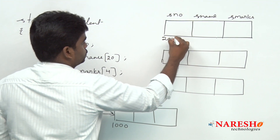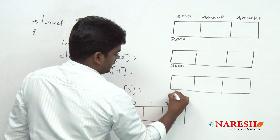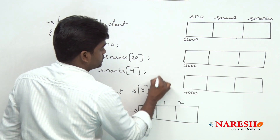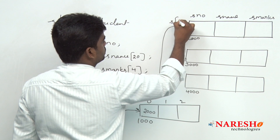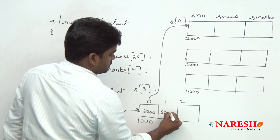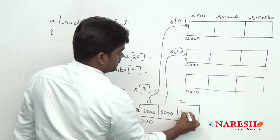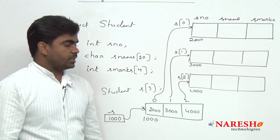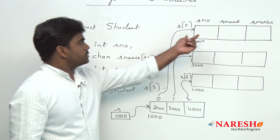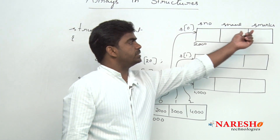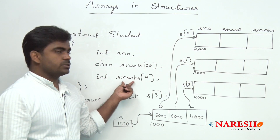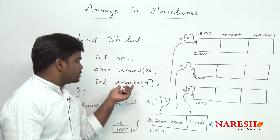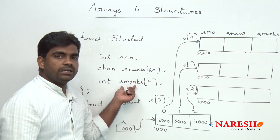Suppose the base address is 2000, then 3000 and 4000 for the other records. 2000 points to the 0th record, 3000 points to s[1] record, and so on for 3 records total. For each record we can store student number, student name, but student marks is an array of size 4, and the array variable 'student marks' holds the address of that array.